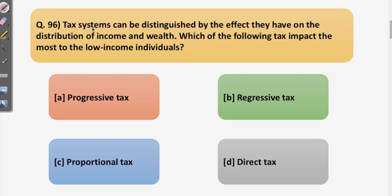The first question says: tax systems can be distinguished by the effect they have on the distribution of income and wealth. Which of the following taxes impacts the most on low income individuals? We will be understanding different types of taxes in the next slide to better answer this question.